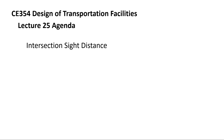Today we're going to be looking at intersection sight distance. In the previous lectures we went through how to design at-grade intersections, looking at vertical alignments for both signalized and stop-controlled intersections, different styles of intersections, and auxiliary lanes where we need left and right turn additional lanes to improve traffic flow and safety.